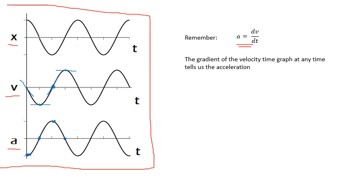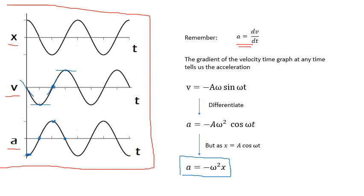Or, by differentiating, because you know how to do that, because you do maths. So, if v is minus Aω sine ωt, if you differentiate that, you get a is minus Aω² cos ωt. And we can substitute, because x is A cos ωt. So, we end up with this equation, a equals minus ω²x, which is very important.